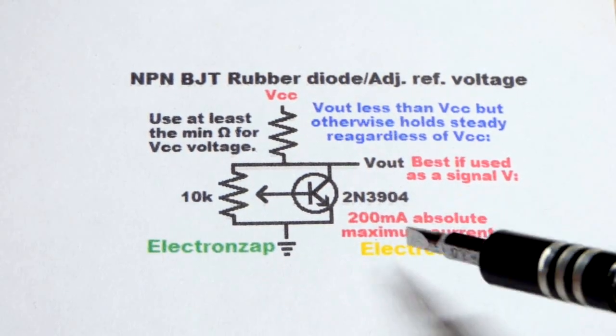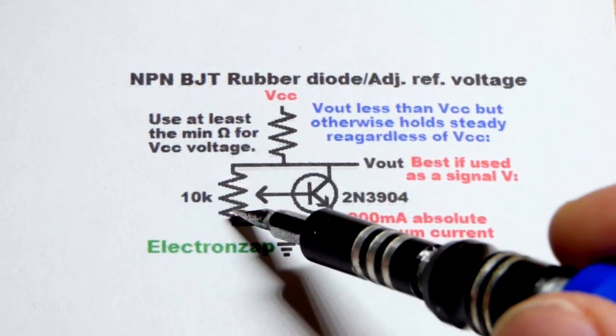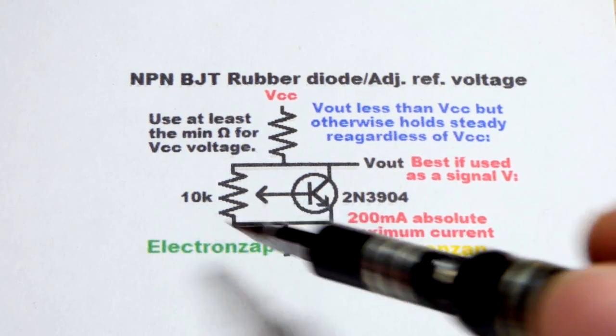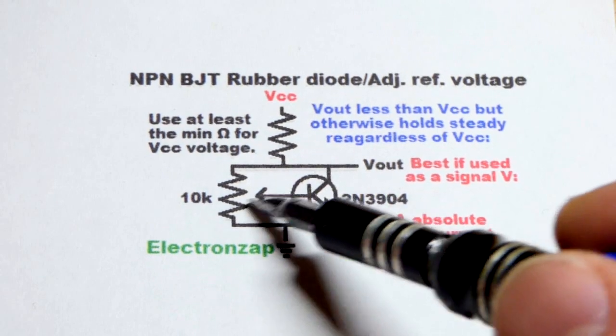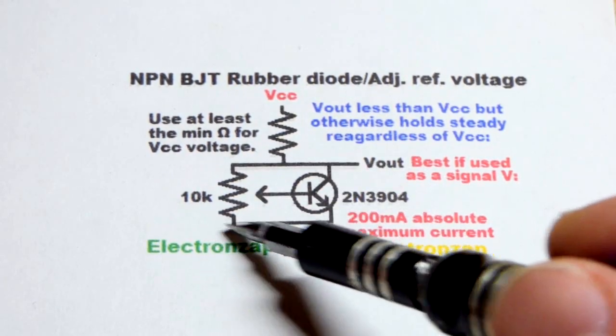In any case, we have it wired completely parallel to a trim pot. I'm going to use a 10,000 ohm trim pot because that's the one that I like the most. There's the wiper going to the base, one end of the trim pot to the collector, the other to the emitter.